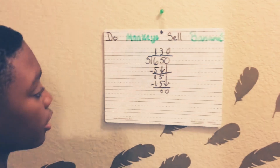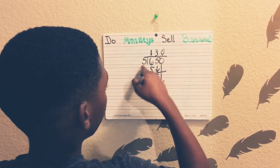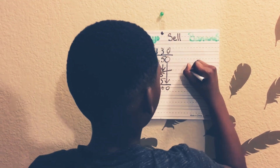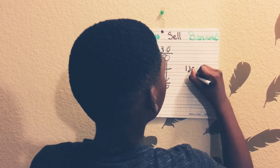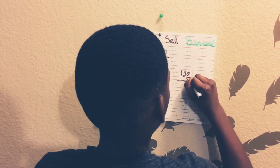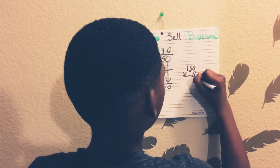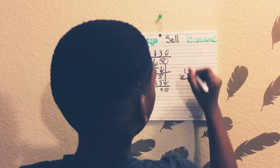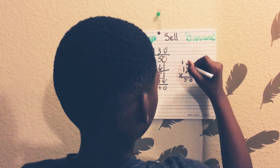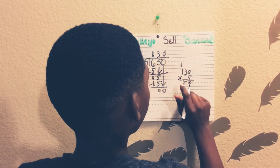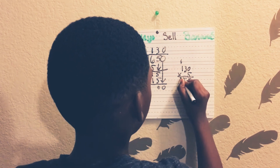To check your work, you can multiply 5 times 130. 130 times 5 equals — 5 times 0 is 0, 5 times 3 is 15, 5 times 1 equals 5, plus 1 is 6.